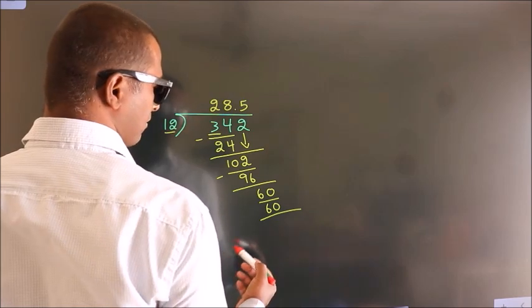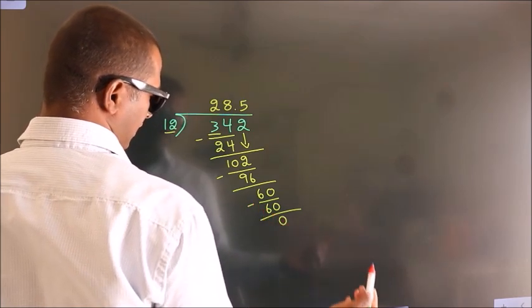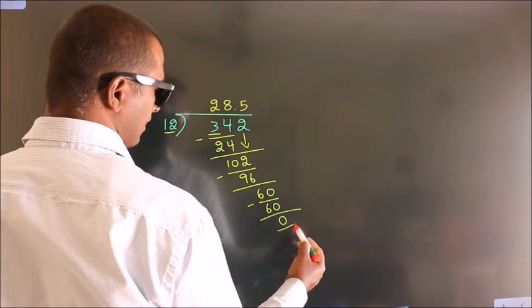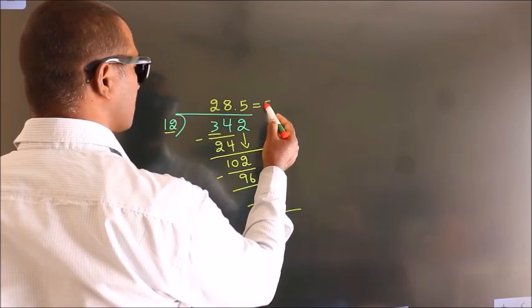Now we subtract. We get 0. Here we got remainder 0. So this is our quotient.